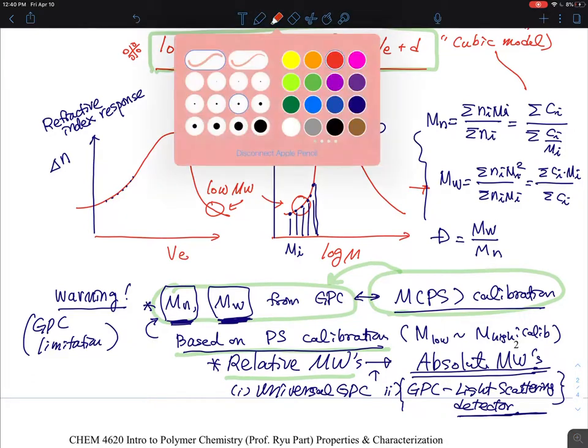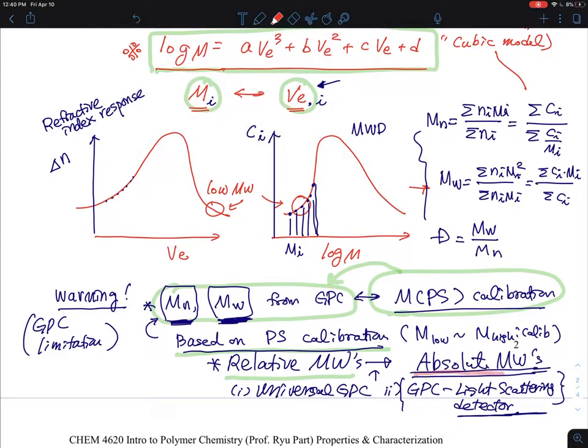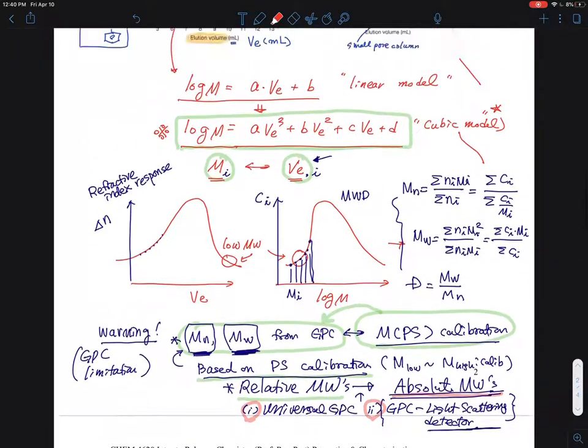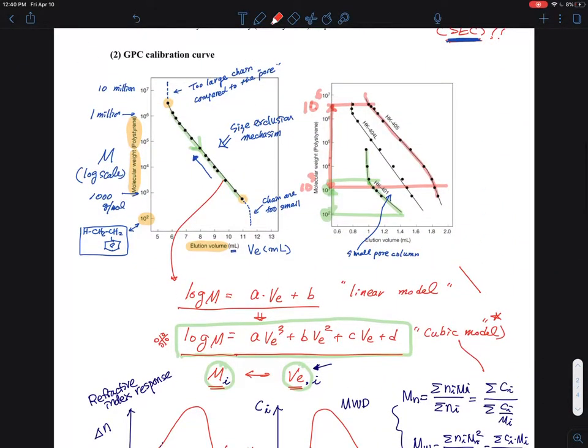If you go down to the hardcore characterization, such as I really want to know the absolute molecular weight, and then you have to do some like two different kinds of method, because GPC inherently is a relative method that rely on this curve that you're showing up here, which is a calibration curve.